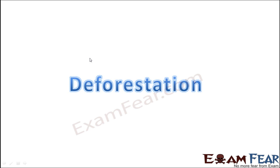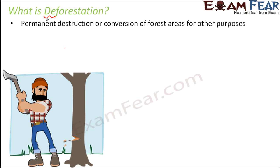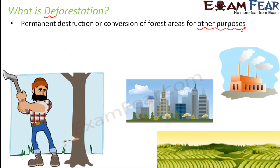So what is deforestation? The name says deforestation — 'de' means something opposite of forestation. Forestation means development of forests, so cutting down forests is deforestation. It is the permanent destruction or conversion of forest areas for other purposes. These other purposes could be establishment of industries and factories, or utilizing the land for agriculture so that more crops can be grown to feed the growing population, or for development of residential apartments.